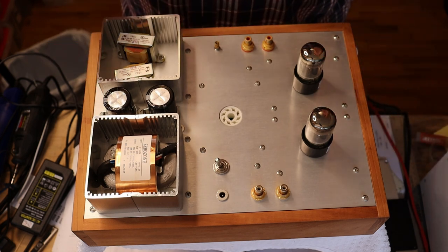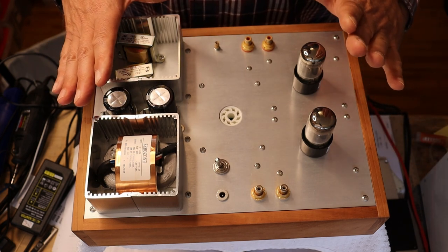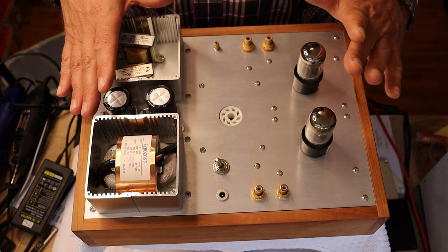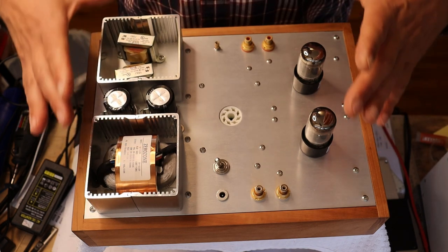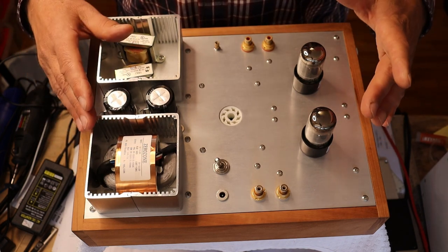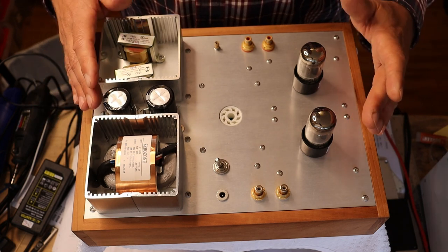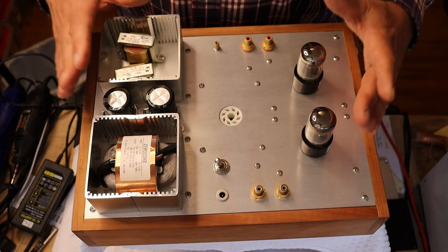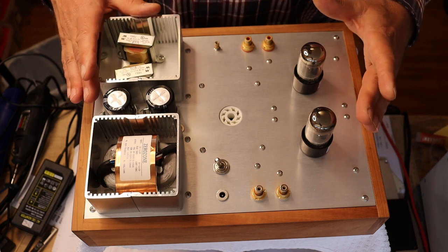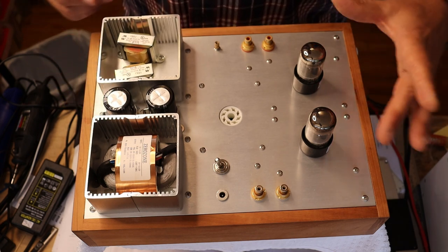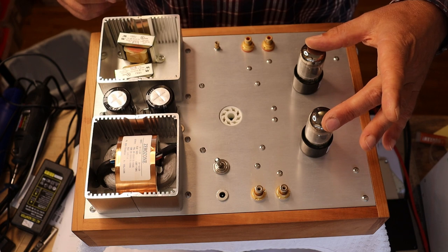So this is a universal preamp, very much like the 6 or 12 SN7, except this uses the SL series, SL7 series of tubes. So the 6 volt 6 SL7 or the 12 volt 12 SL7. And those are in the gain stages. There's two gain stages.